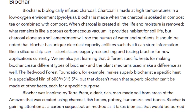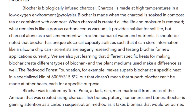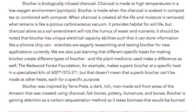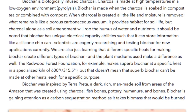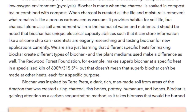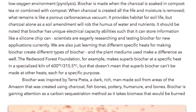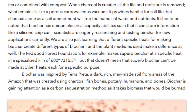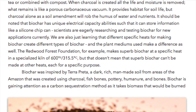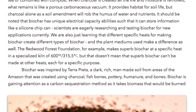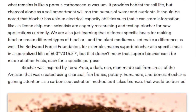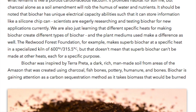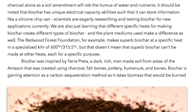Scientists are eagerly researching and testing biochar for new applications. We are also just learning that different specific heats for making biochar create different types, and the plant mediums used make a difference as well. The Redwood Forest Foundation, for example, makes a superb biochar at a specific heat of 600 degrees Fahrenheit (315.5 degrees Celsius) in a specialized kiln. But that doesn't mean superb biochar can't be made at other heats, each for a specific purpose.